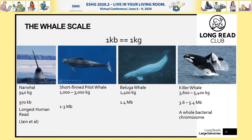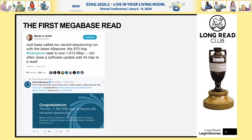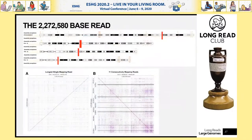All Nanopore software is named after fish — I know whales aren't fish, but they swim, so we use them. That 970 KB read set off a competition to be the first to get a megabase read. That record went to a group in Australia. We were disappointed, but then in February 2018 we achieved a read of 1.4 megabases and went on to find more. The longest read we have achieved to date is 2.272 megabases.